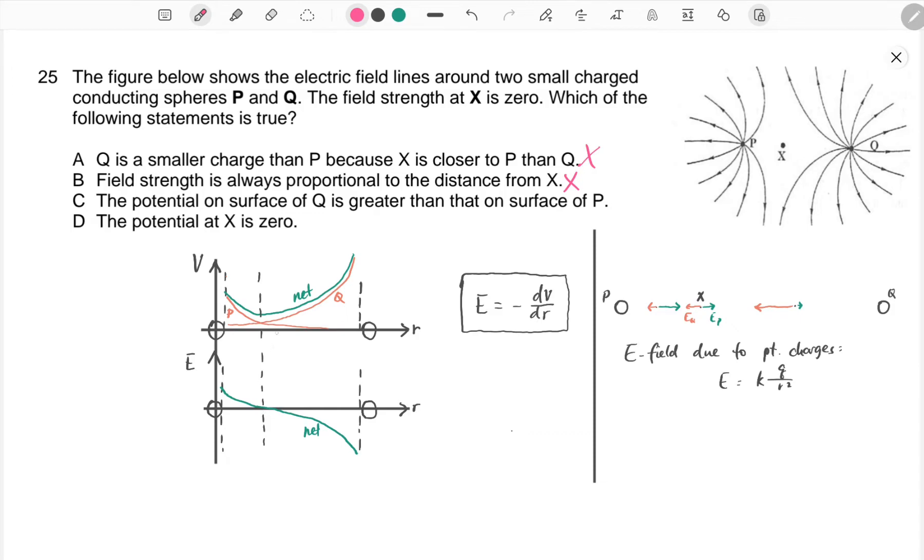You can also think about it from - it can also be derived from the gradient of V against R graph. So above you see the V against R graph, each of the contribution is the pink line. Combined together, they give you the green line. So the gradient of the green line gives you E against R. So B is incorrect.